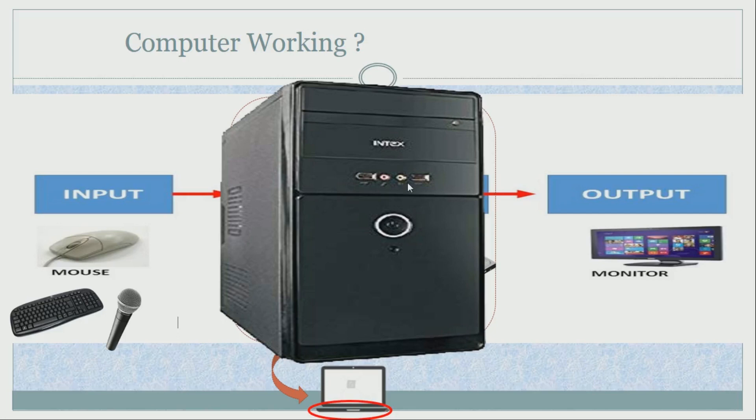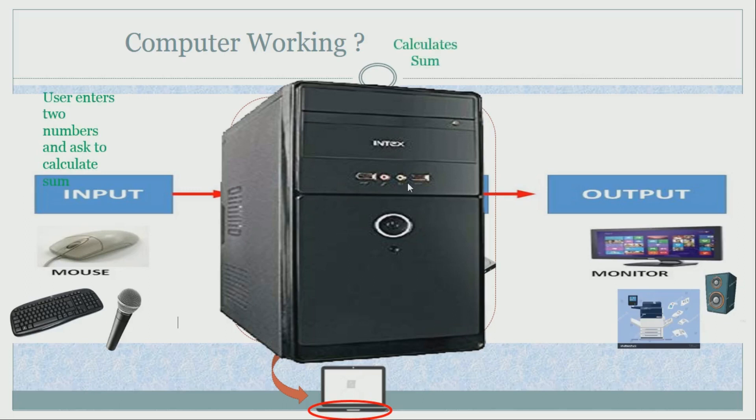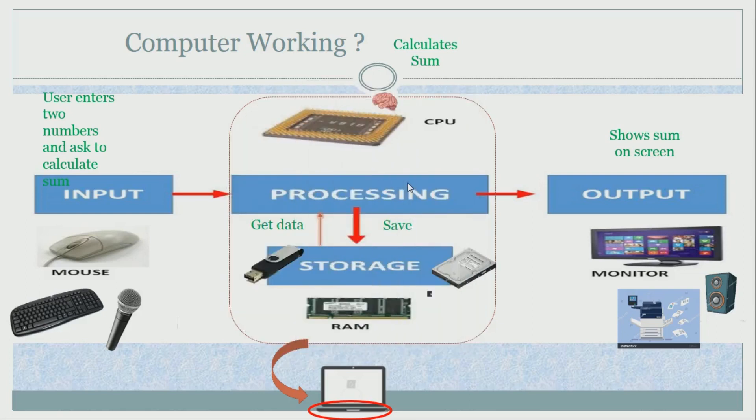Once operation is performed, the data is shown to the user using the output devices like monitor, screen, printer, speaker, etc. The question is, how does the computer work here? Very simple answer. User enters two numbers and asks the computer to calculate its sum. System unit calculates sum and sum is shown on the computer screen. Our next question is, how does the system unit work and which components are in it?